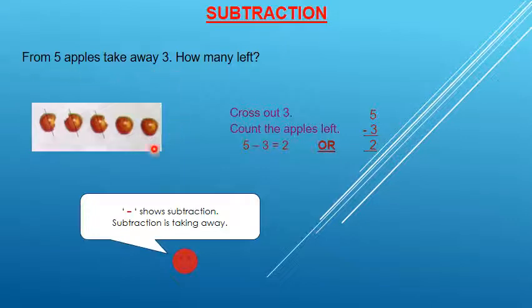Look here students. How many apples here? Count all apples. 1, 2, 3, 4 and 5. Cross out 3 apples. So I have cross out 3 apples. 1, 2 and 3. So how many left? 1 and 2. So 5 minus 3 is equal to 2. Your answer is 2.